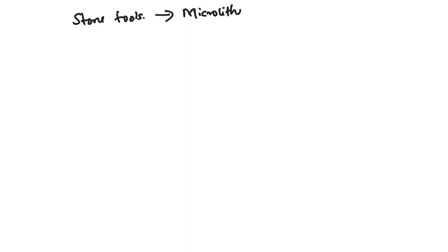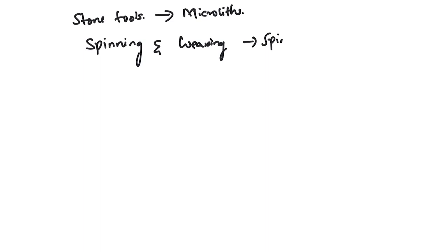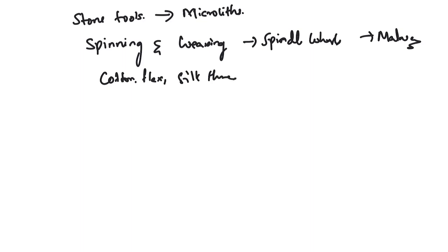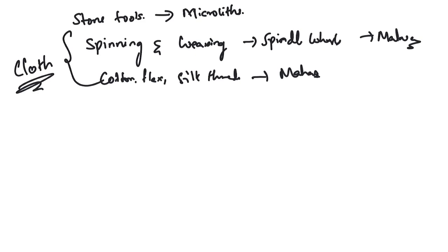In this culture there were large numbers of very small-sized stone tools called microliths. The people knew the art of spinning and weaving, because during excavation archaeologists found spindle whorls, which were discovered in Malwa. Cotton, flax, and silk threads have been found in Maharashtra, showing that these people manufactured cloth.